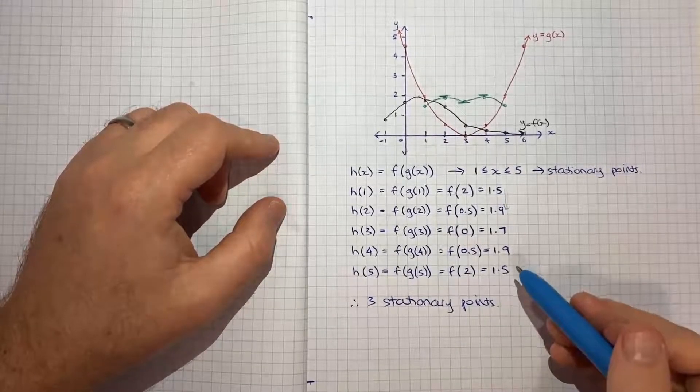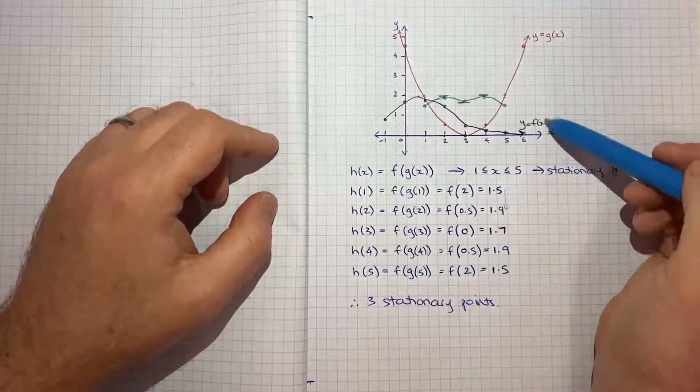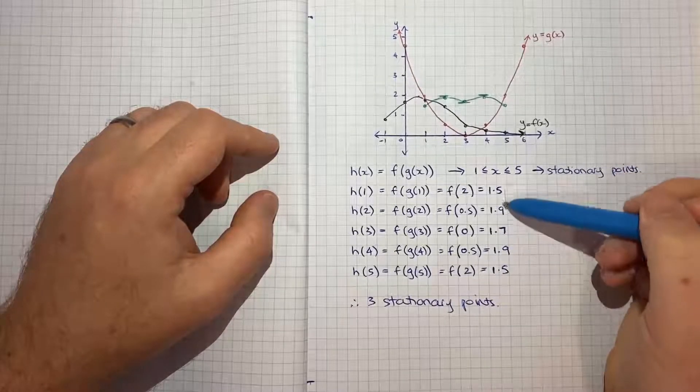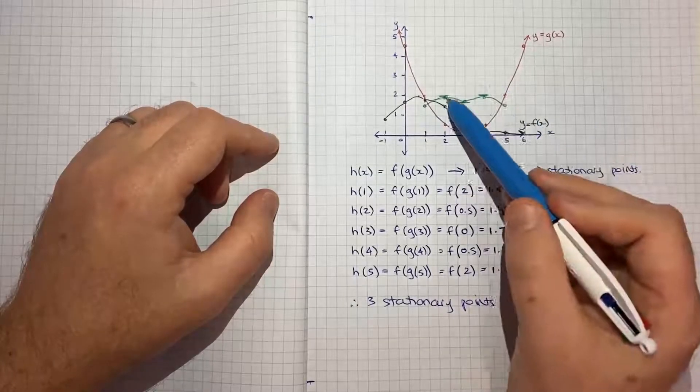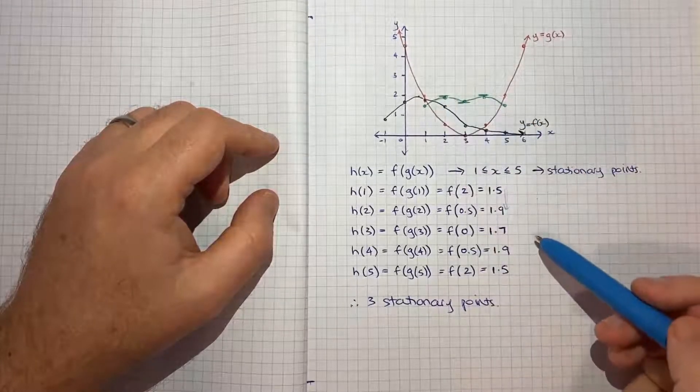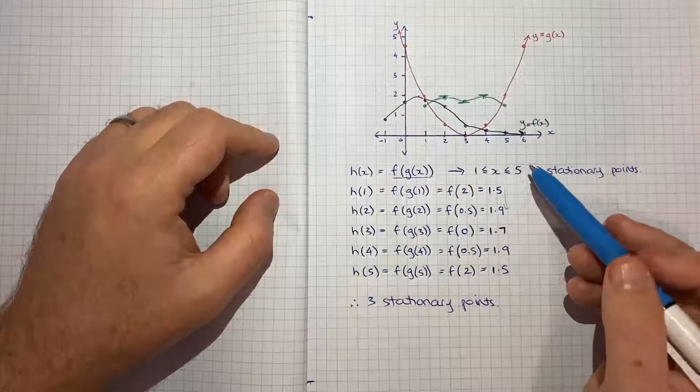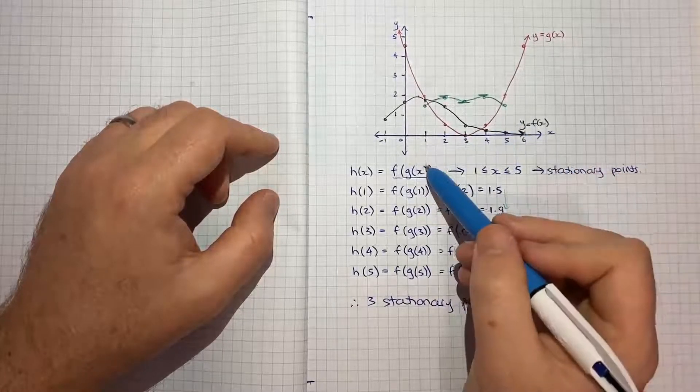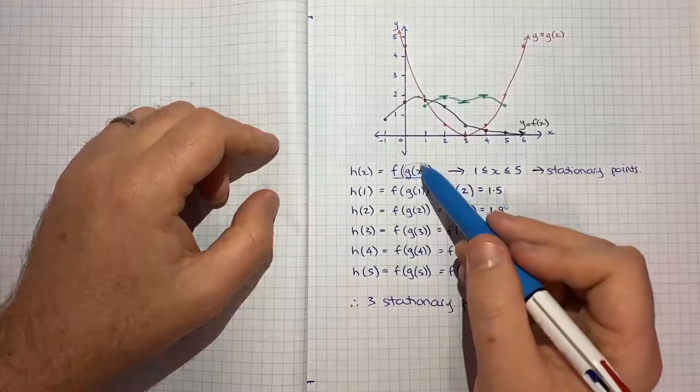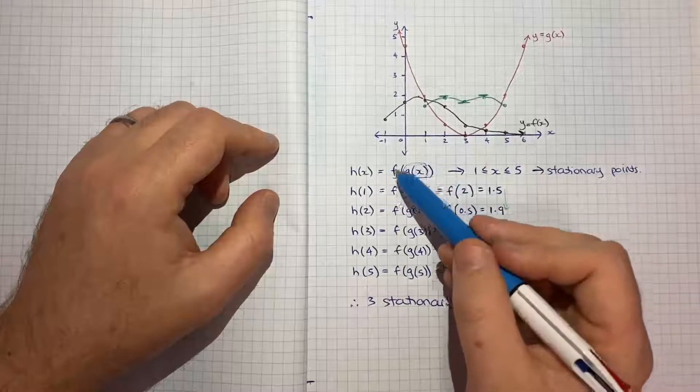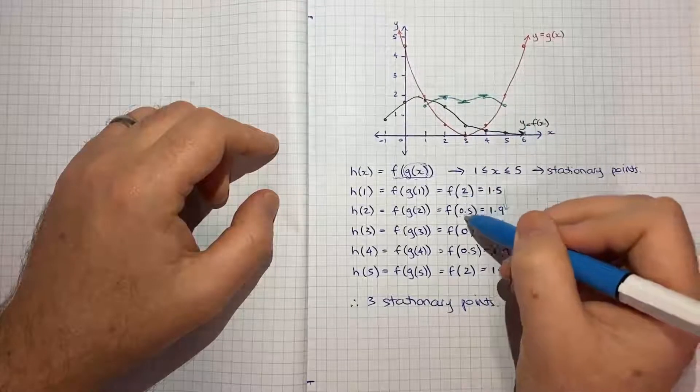And that's kind of all there is to that question. Somewhat challenging in that we're not given the exact functions and we have to kind of visually inspect and do our best. But I think at least in this example, it's quite clear you can kind of see those points. So whenever you're in a situation where you're dealing with composite functions and all you're given are the charts, you just need to follow this methodical step where you first evaluate the inside function and then use that result to say that's now the x value for the outside function. And you just have to use the charts to work out each of those values.